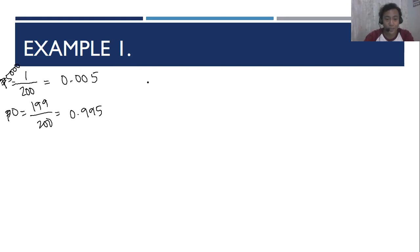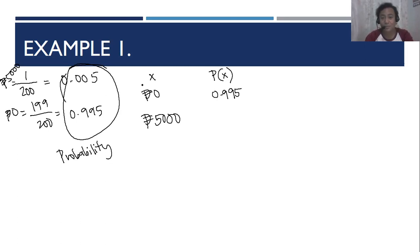Now, let's construct a table of values. We have x: 0 peso and 5,000 pesos. And then for the probability, P(x). Para sa may 0 peso, we have 0.995. Almost 100%, ang laki ng chance para wala akong mananalo. For the 5,000 pesos naman, we have 0.005. Napakaliit lang ng chance para manalo ka ng 5,000 pesos.